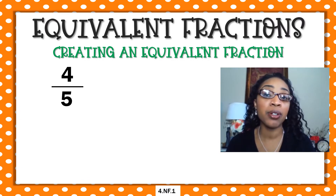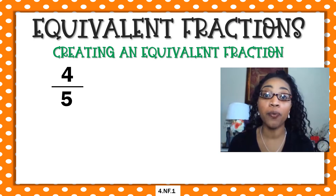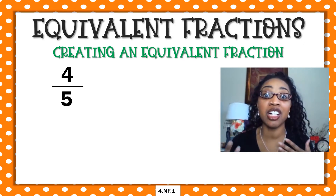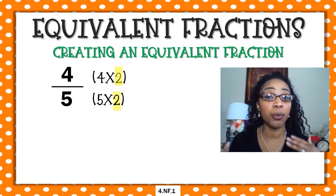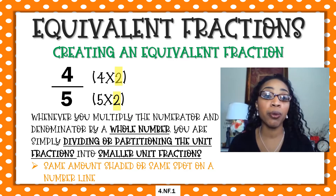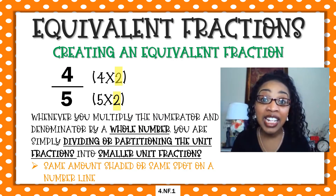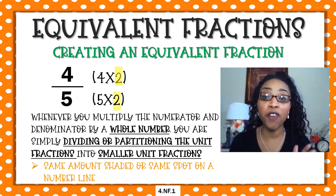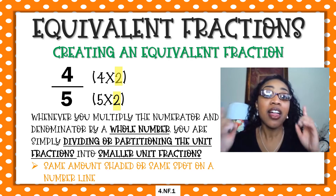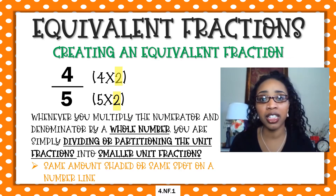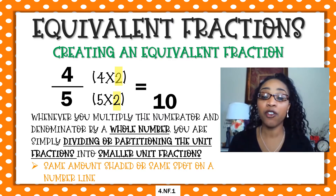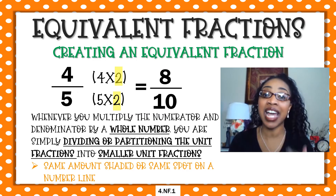Now that we understand exactly how equivalent fractions work, let's create an equivalent fraction of our own. So here we have four fifths. We are simply just going to create an equivalent fraction by multiplying our numerator and our denominator by a whole number — I'm just going to do two for example. So four times two and five times two. Whenever you're multiplying the numerator and the denominator by a whole number, you're simply partitioning the unit fractions into smaller fractions. The value does not change. Four times two would be our new numerator and five times two our denominator. Five times two is ten, and four times two is eight. So four fifths is equal to eight tenths.